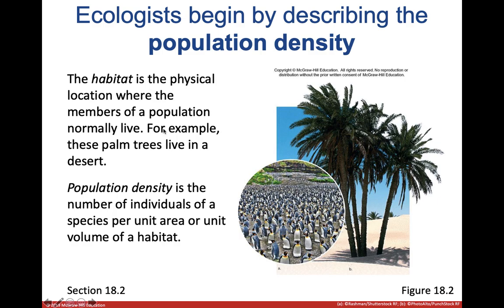Let's talk about how ecologists look at and describe populations. The first thing you want to find is what their habitat is — where do those organisms normally live, where are they going to be found, what's their normal environment? Next, you want to figure out population density — how close together, how far apart, how well dispersed these organisms are in their environment. That's going to influence a lot of things: are there a lot of organisms grouped together, spread out, or moving in a big clump?